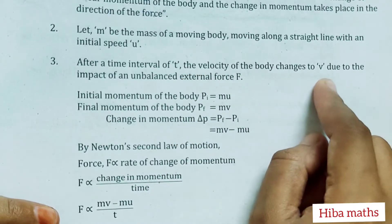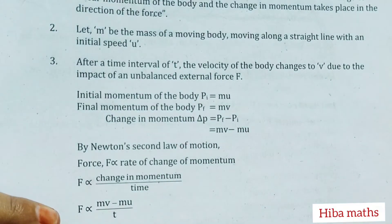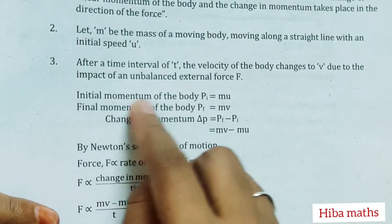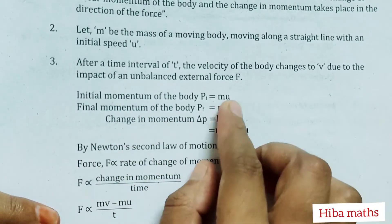the velocity of the body changes to v. The velocity of the body changes due to the impact of an unbalanced external force.